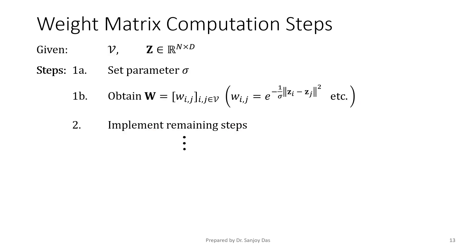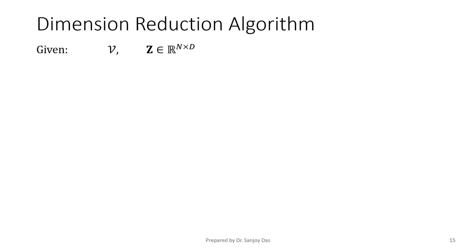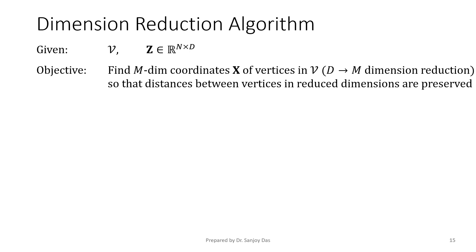These are the steps to obtain the weight matrix w. When a sparse weight matrix is desired, we have to incorporate the neighborhoods. This is the dimension reduction algorithm. We are given the data z and the objective is to find m-dimensional coordinates x of vertices in v, which is a d to m dimension reduction, so that the distances between vertices or points in reduced dimensions are preserved.